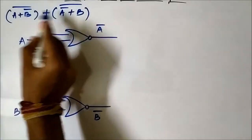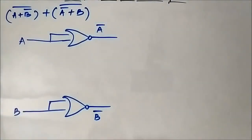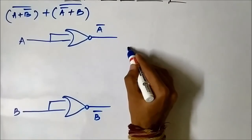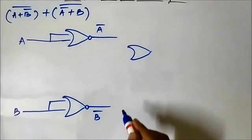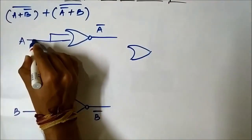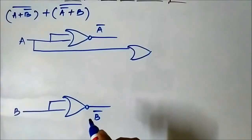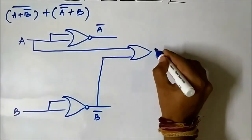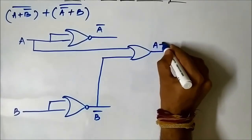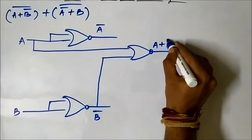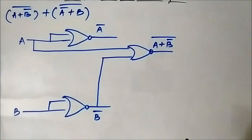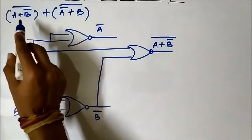Next, we have to generate the two intermediate signals: A OR B complement whole complement, and A complement OR B whole complement. We will use another NOR gate and give inputs A and B to it. This gives us A OR B complement whole complement. It is a NOR gate — I missed the bubble. So A plus B complement whole complement — we have got this expression.